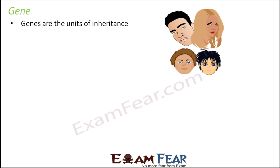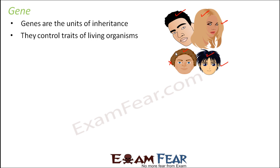Looking at this family picture, you can see that this couple has two kids. The hair color of one kid is similar to his father, but the hair color of the other kid is similar to his mother. If you look at eye color, the eye color of one kid is similar to the mother's, but the eye color of the other kid is different from both father and mother. So some traits might be new, but there are traits carried from the previous generation. Genes are the units of inheritance — they control and regulate the traits of living organisms.